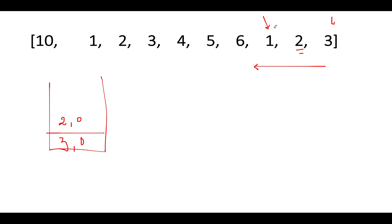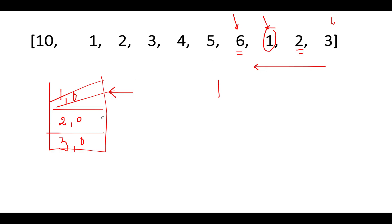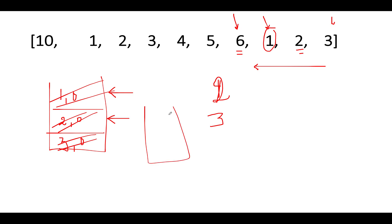Next we see 1 - 1 is again lower in value than the peak element of the stack which is 2, so we add (1, 0) onto the stack. Next we see 6 - 6 is greater than the peak element, so we pull out 1 from the stack and the count gets updated to 1. Again the peak element is 2 which is lower than 6, so we delete it - count gets updated to 2. Next we see 3 - 3 is lower than 6, count gets updated to 3. The stack is now empty. We add (6, 3) onto the stack because at 6 we see that 3 elements have been deleted - one possible answer is 3.